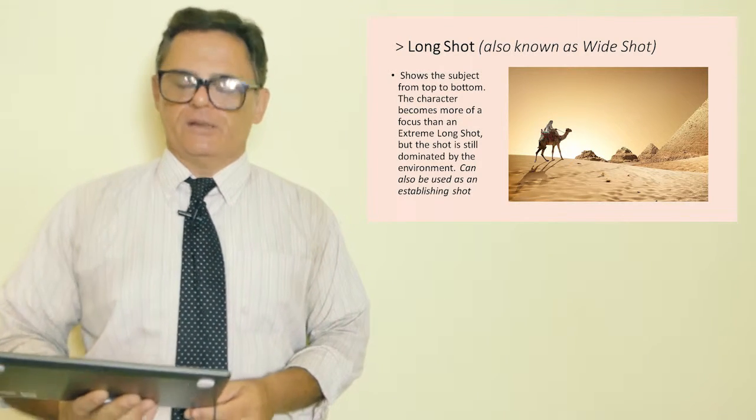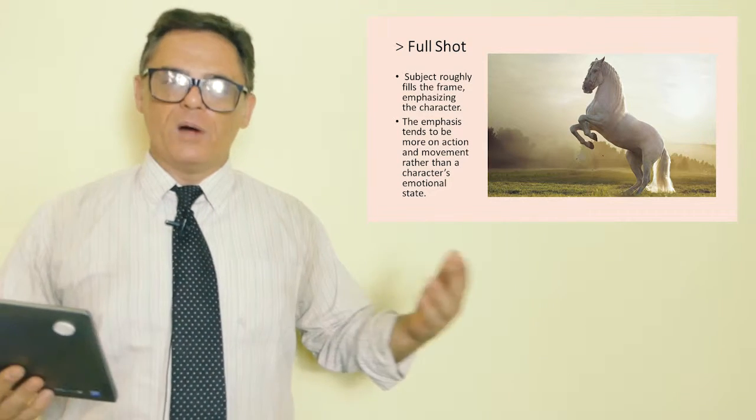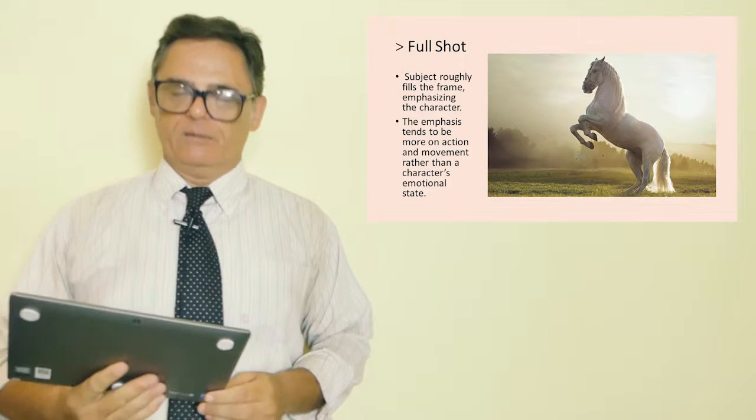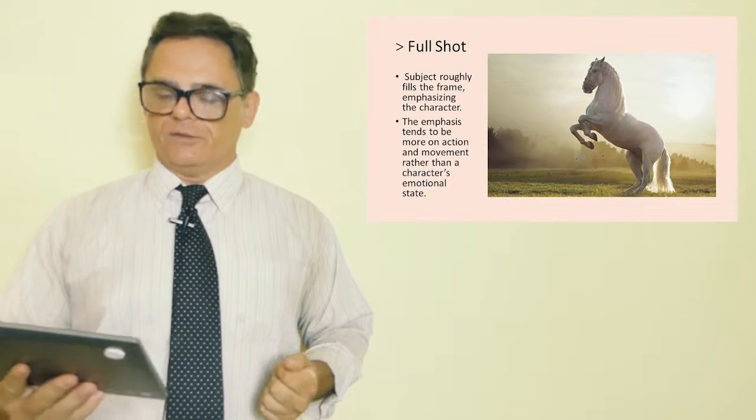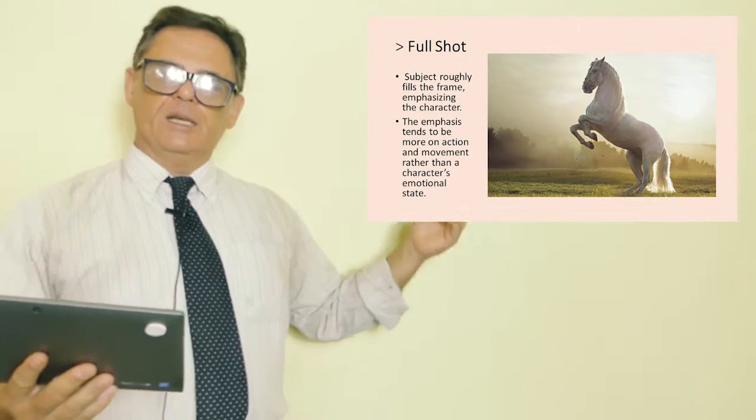Moving on to something now known as the full shot. The subject here now is far more clearly seen than in the long shot or wide shot as it's known. Seen in its entirety, you can see the subject roughly filling the frame. So it's emphasizing the character or the subject. In this case, it's a horse. So the subject is not always a human. It could be a robot if we're looking at gaming or other formats, other narrative structures. But we can see the character in its completion, the full body.